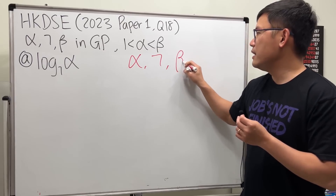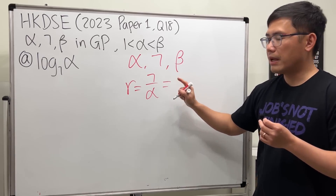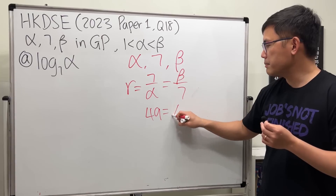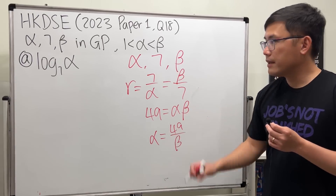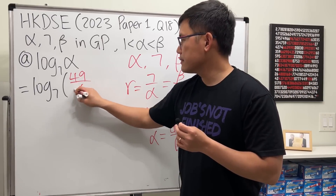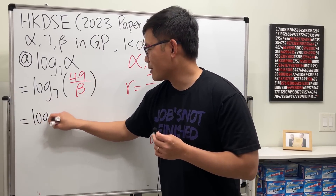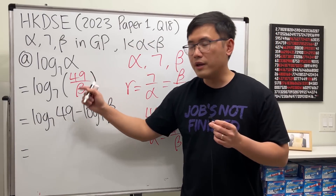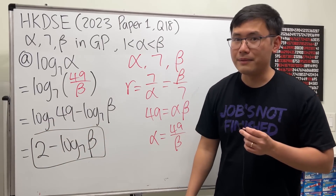For part A, since α, 7, β are in geometric progression, the common ratio equals 7 divided by α, which also equals β divided by 7. Cross-multiplying gives 49 = α·β, so α = 49/β. Therefore log base 7 of α = log base 7 of (49/β) = log base 7 of 49 − log base 7 of β = 2 − log base 7 of β. That's part A, worth only three marks.